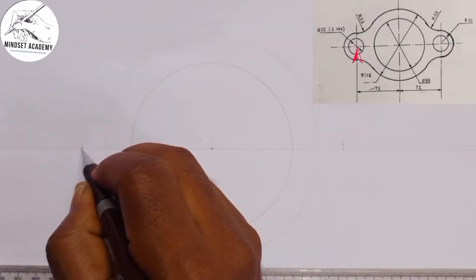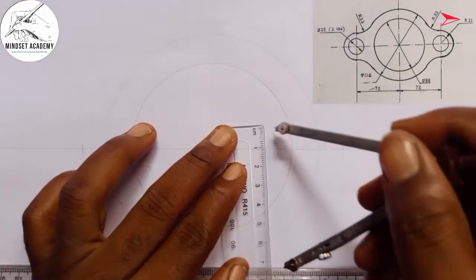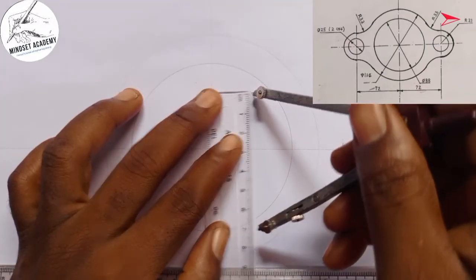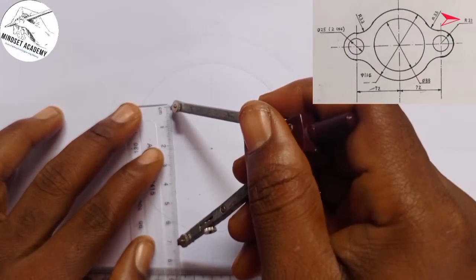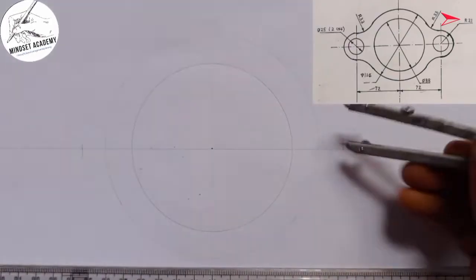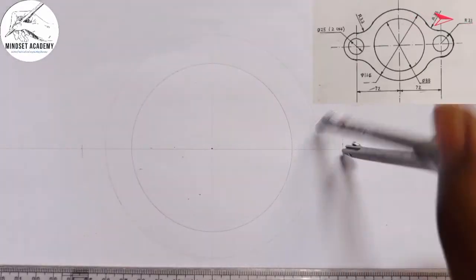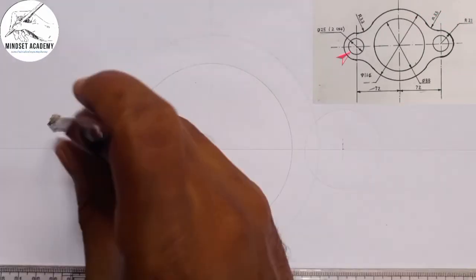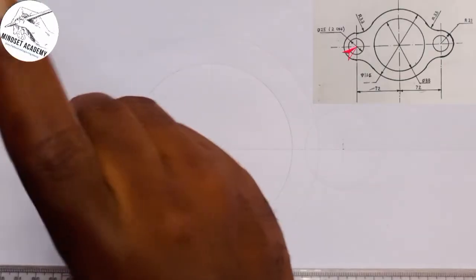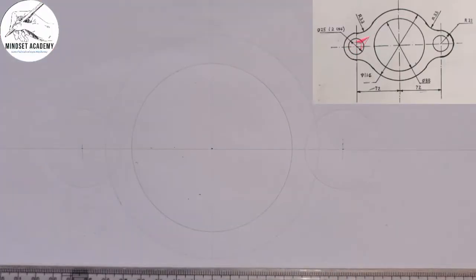And the radius of the circle, this particular one here, the outer one, is 21. So I am going to measure 21. This is 21 here. And I will place it at this point. I am going to draw a circle, but it will be faint line first. I will come here also and do the same thing. You can see that.